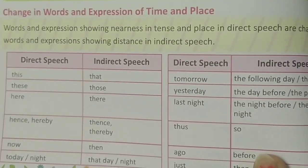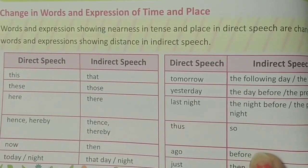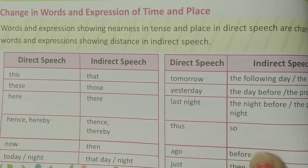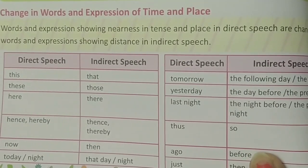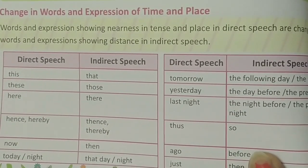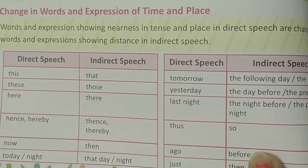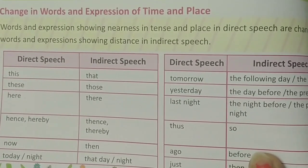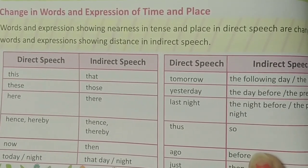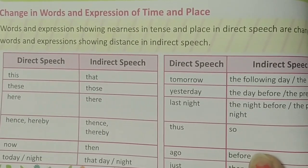Hello students! In the previous video we started the topic of reported speech. We discussed that reported speech changes direct into indirect, and we change three parts: the pronouns, the tenses, and the change in words and expressions of time and place. In the previous video we covered pronouns and tenses, so today we will do change in words and expressions of time and place.